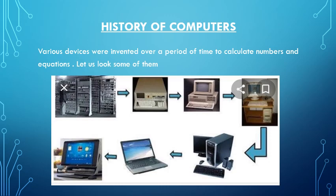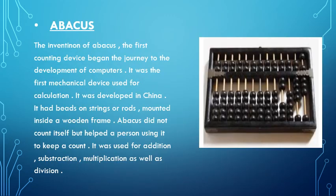History of Computers: Various devices were invented over a period of time to calculate numbers and equations. Let us look at some of them. Abacus — the invention of the Abacus, the first counting device, began the journey to the development of computers. It was the first mechanical device used for calculations, developed in China. It had beads on a string or rods mounted inside a wooden frame. The Abacus did not count itself but helped a person using it to keep a count.